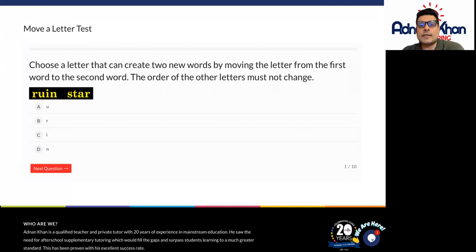So we're moving one letter from the word on the left which is ruin and we're going to move that letter to the right to create two brand new words without changing the order of the letters.